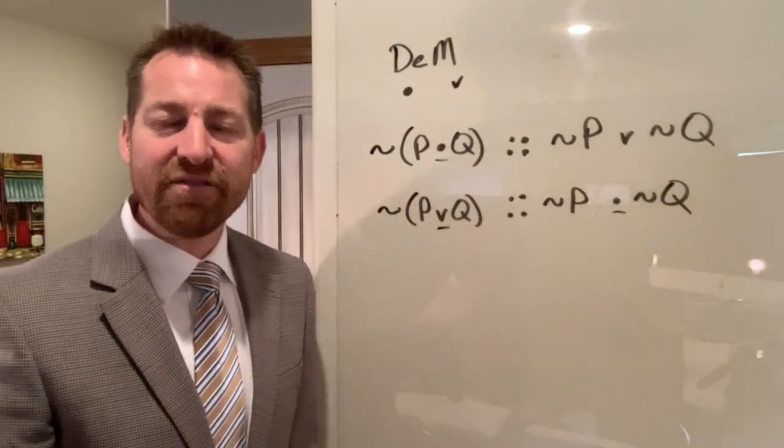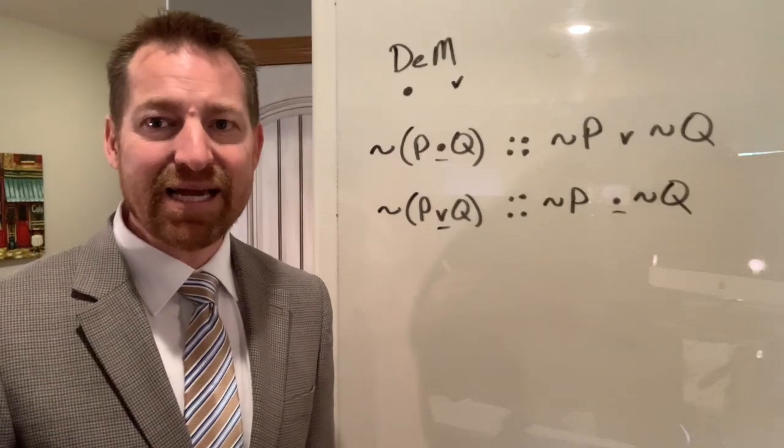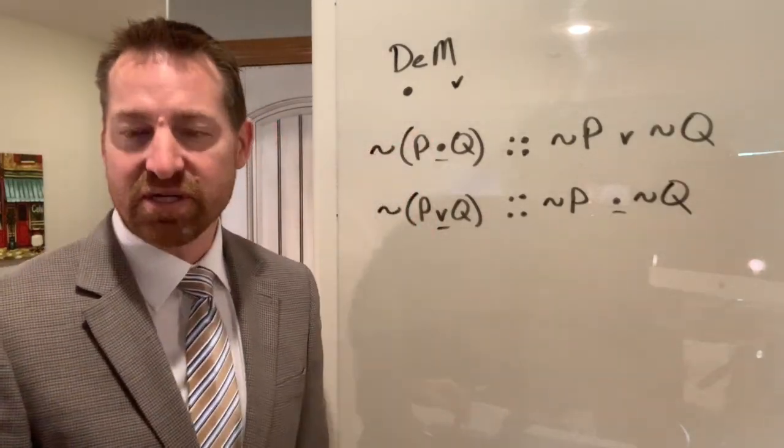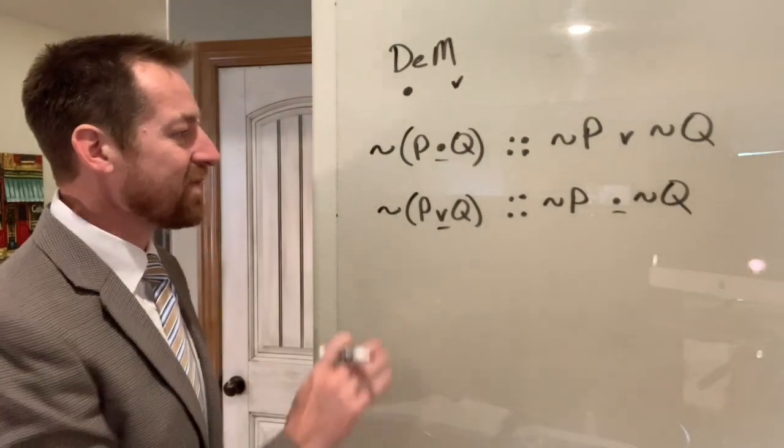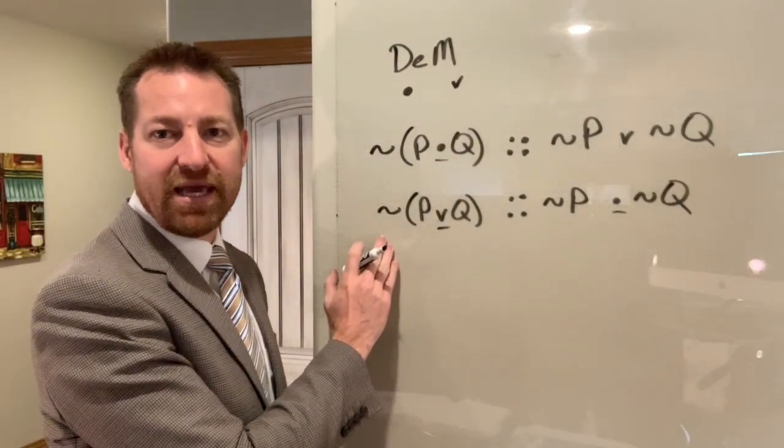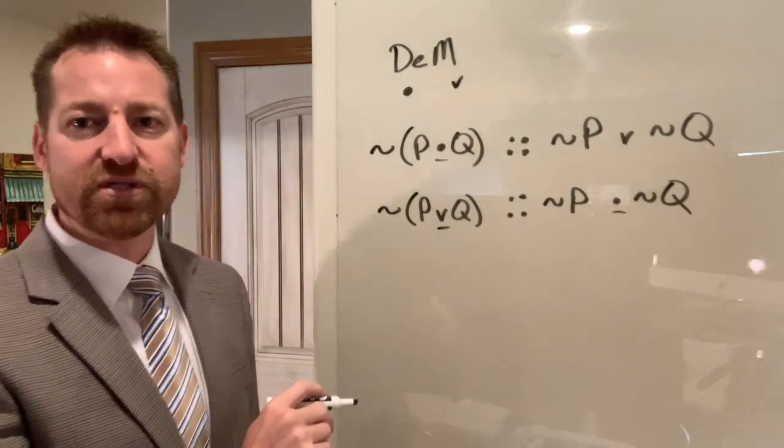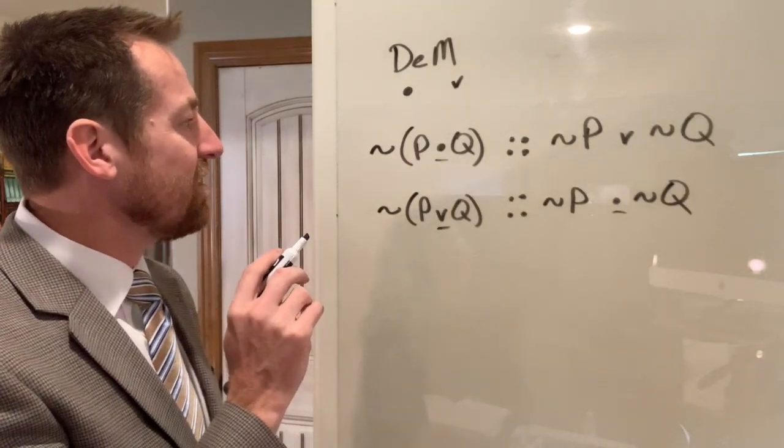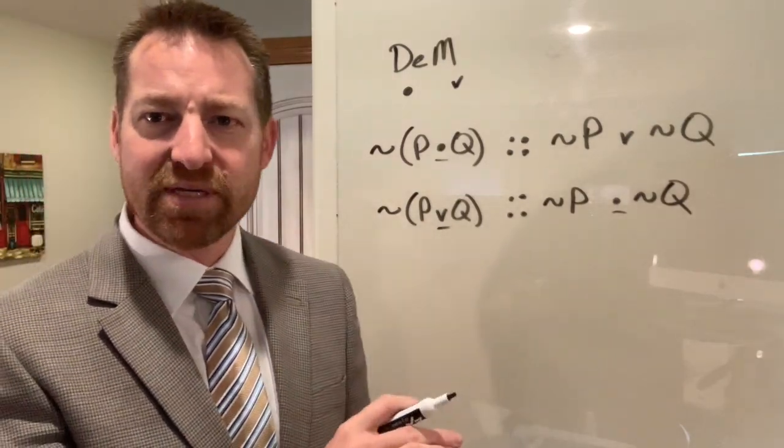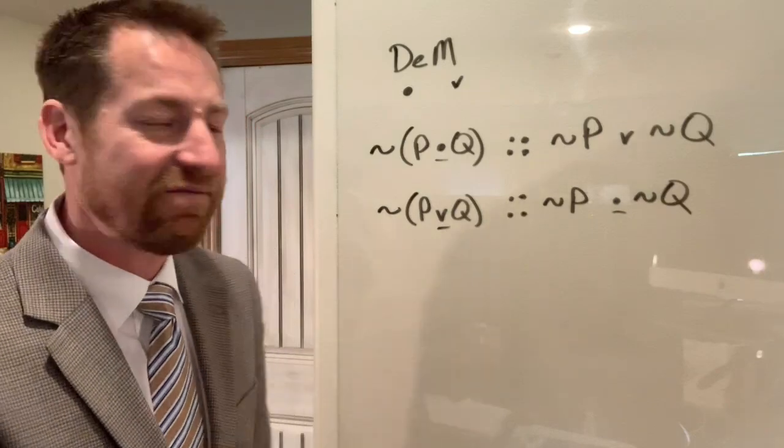Now let me point out that you can really apply this anytime you see a conjunction or a disjunction in your proof. It may not seem obvious because you'll generally be looking out for a negation in order to apply DeMorgan's Law. But remember I told you when we talked about double negation that there's invisible negations in front of everything.